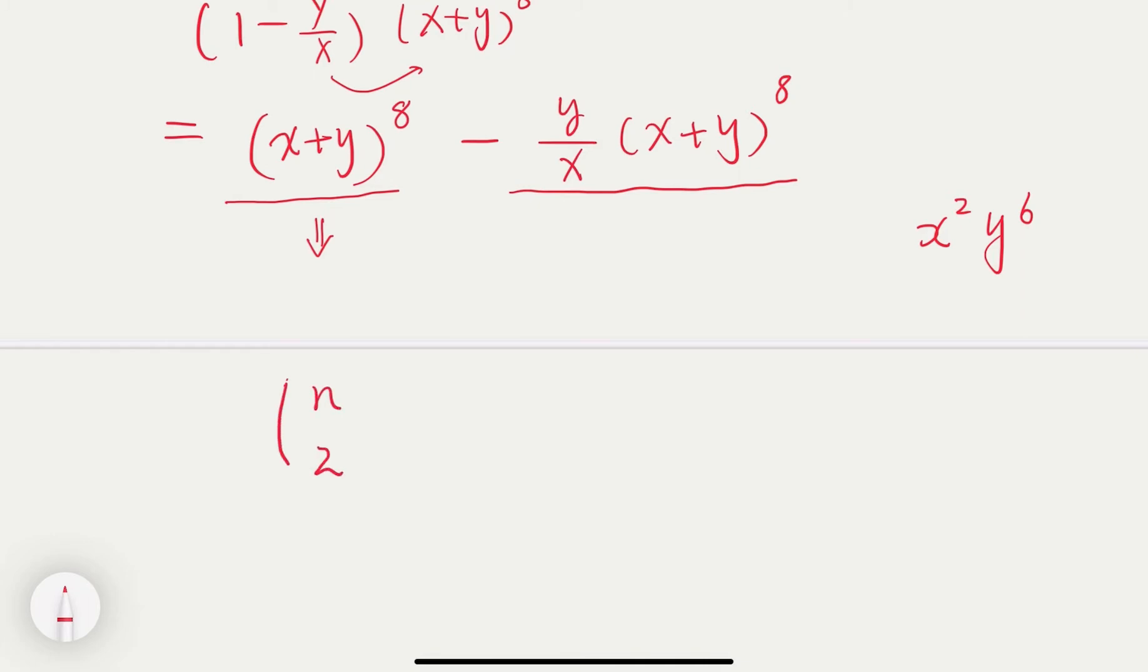Of course, n here is 8, so equal to 8 choose 2. So we know that that's 8 times 7 divided by 2 times 1. So that's equal to 28.